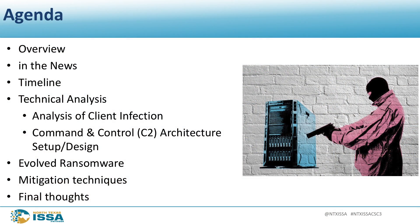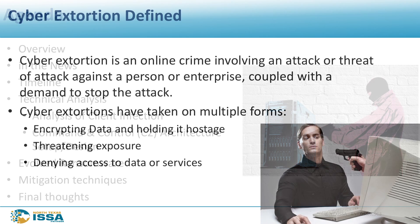Let's go over the agenda. We're going to talk about what ransomware is, ransomware in the news, and give a timeline from its humble beginnings to where we are now. Then we'll do a technical analysis of what's actually happening in a ransomware infection, as well as a look at the topology of a C2 network. Then we'll talk about evolved ransomware, ransomware outside the scope of the Windows domain, and mitigation techniques on how to prevent ransomware, and then final thoughts.